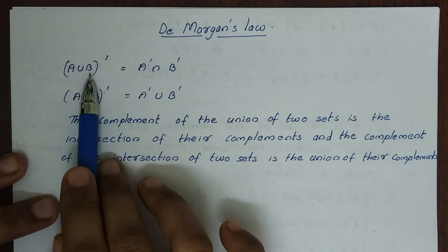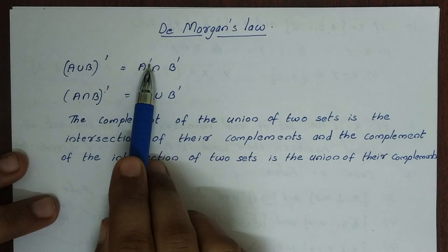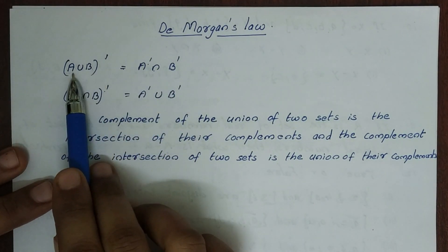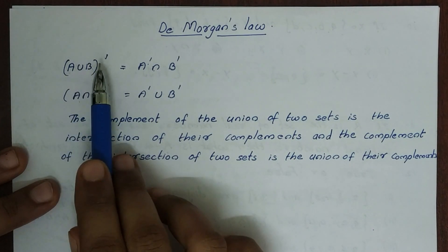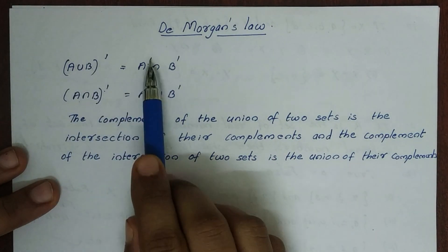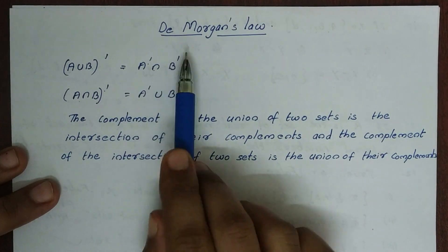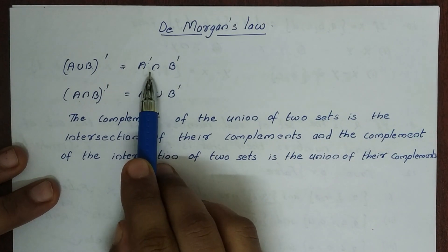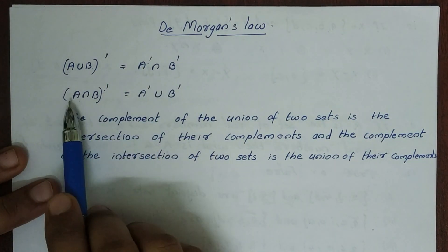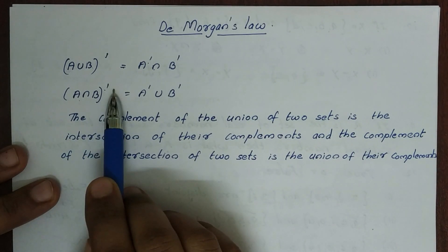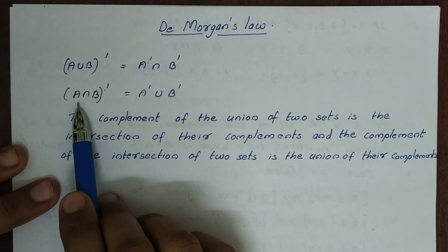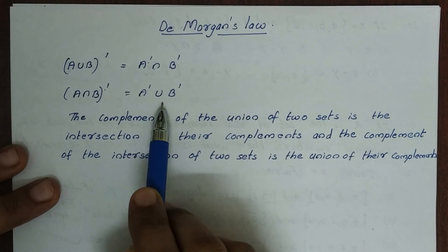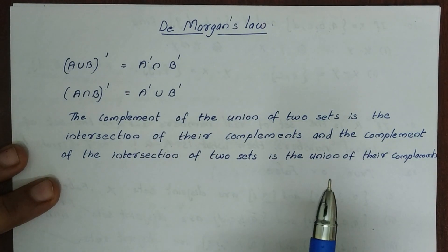A union B complement equals A complement intersection B complement. This is a complement. That is the first De Morgan's law: (A∪B)' = A'∩B'.